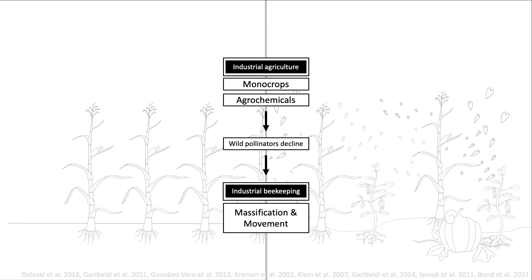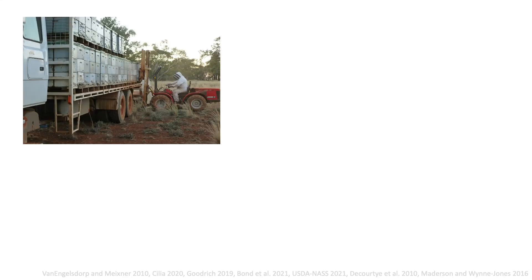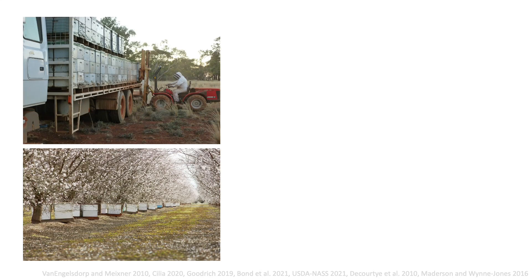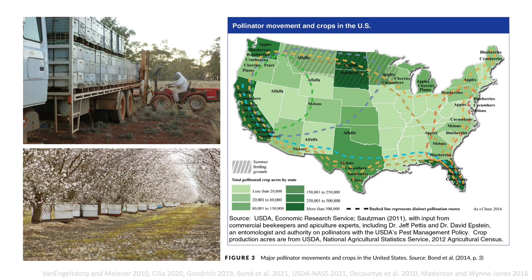Because they pollinate a wide variety of plants, and because their colonies contain tens of thousands of individuals, honeybees are a relatively effective pollinator to mobilize and massify. When industrial agriculture manufactures a demand for pollination services, industrial beekeeping meets that demand. Every year, commercial beekeepers transport more than 2 million colonies around the United States to pollinate crops like almonds, apples, blueberries, and melons. Pollination contracts, in which beekeepers rent colonies to growers on a temporary basis to support crop yields, provide a vital source of income for many commercial beekeepers.